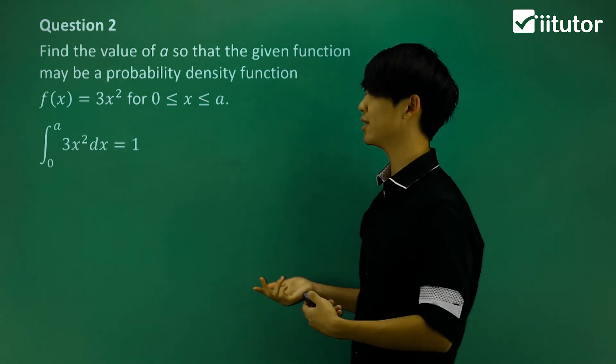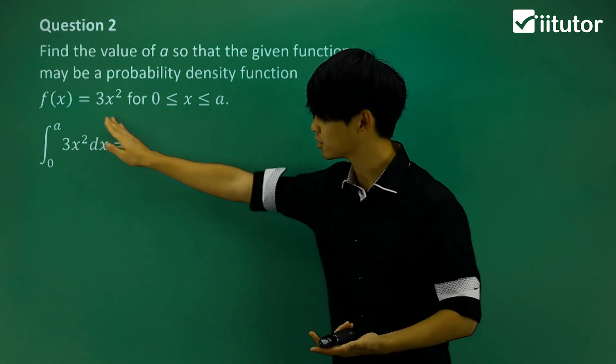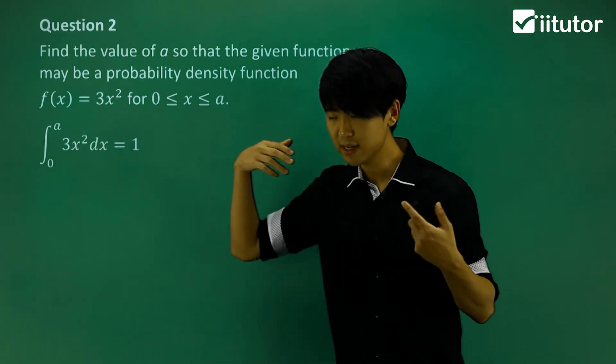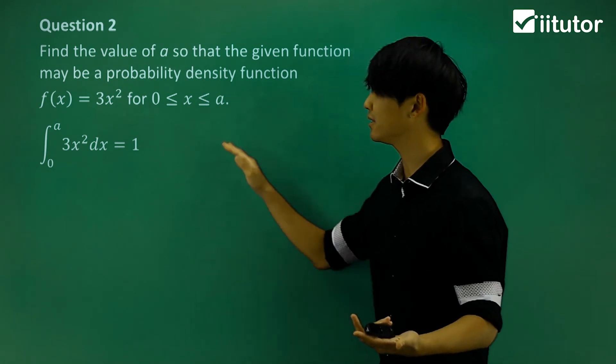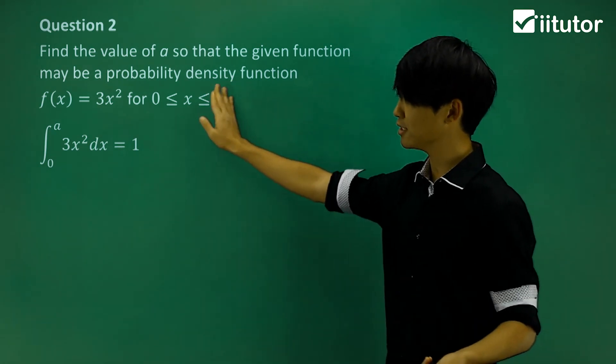So again, let's try and integrate it. So if we find the area under this curve between 0 and a, hopefully that will give us 1, meaning that it will be a probability density function. So let's try and evaluate this.